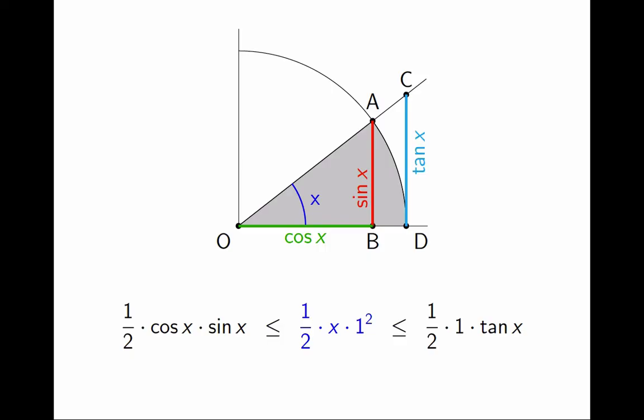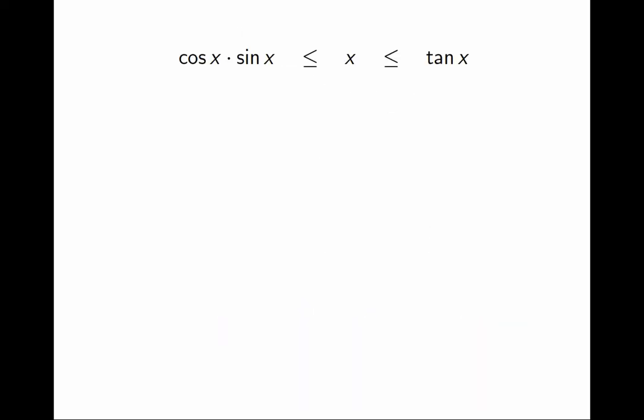I'll take it from here, from these inequalities. I no longer need the picture, and I will multiply everything by 2. So I have that cos(x)sin(x) is less than or equal to x is less than or equal to tan(x). And I can write tangent as sin(x) over cos(x).